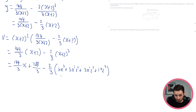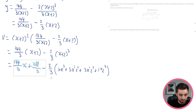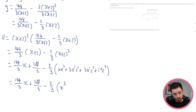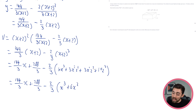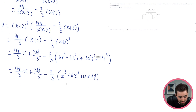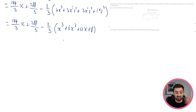Essentially we've got our stuff, we just need to clean it up. 1 times x cubed is x cubed. x squared: 3 times 2 to the 1 is 6, so plus 6x squared. 3 times 2 squared — 2 squared is 4, 3 times 4 is 12 — so plus 12x. And then 2 cubed is 8.